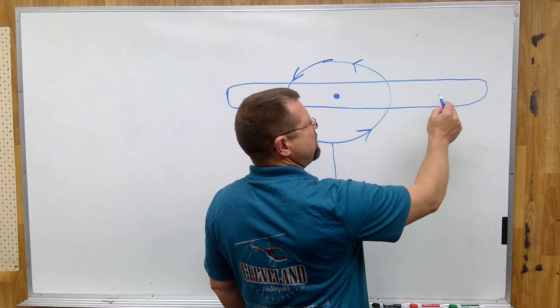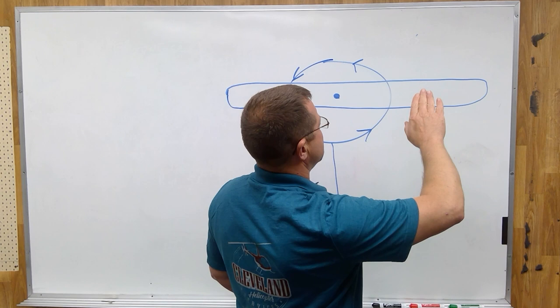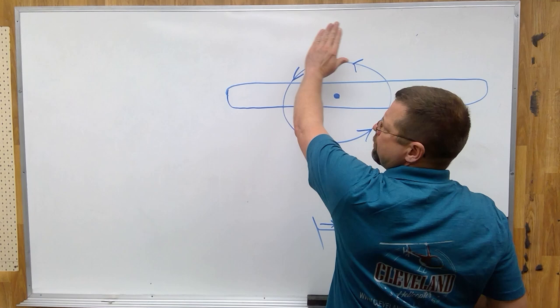This is the advancing blade of the helicopter, so this blade is moving forward towards the front of the helicopter. This blade is the retreating blade, it is moving rearward, away from the front of the helicopter.